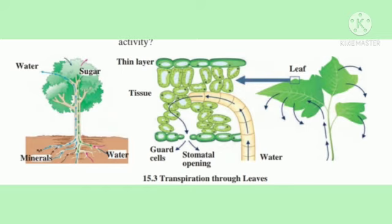Now let us see about the transpiration pull. Plants give out water in the form of vapour through the stomata on their leaves. Two cells called guard cells are present around the stomata. These cells control the opening and closing of stomata. Transpiration occurs through these stomata and water is released into the atmosphere by leaves through the process of evaporation. As a result, the water level in the epidermal layer of the leaf decreases. Water is brought up to the leaves through the xylem so as to compensate for the lost water. Transpiration helps in the absorption of water and minerals and their distribution to all parts of the plant, whereas root pressure performs the important role of pushing water up during the night time.